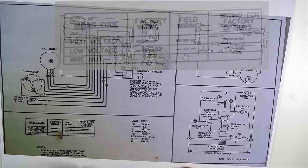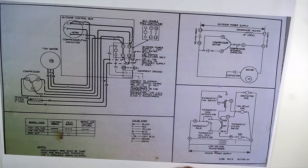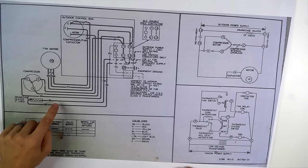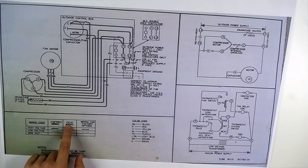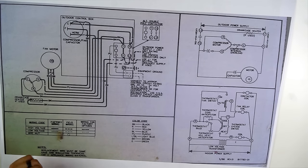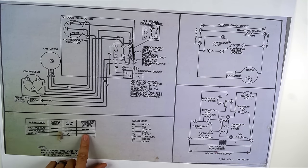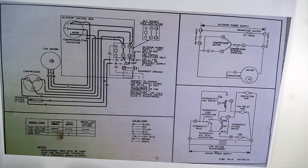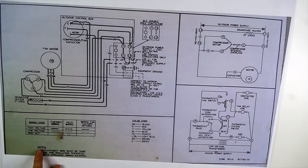Dashed lines mean those wires may or may not be in the unit. Factory wiring means the wires are already in the condenser unit — they come with it. Field wiring is wiring that has to be added or installed by the installer; these wires do not come with the unit. Wiring for factory options means those wires may or may not be there — for example, the unit might or might not have a start capacitor. There are also some notes on the bottom.